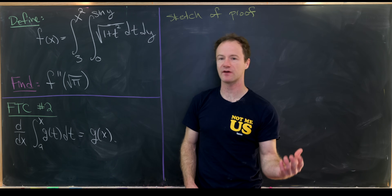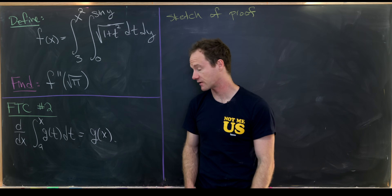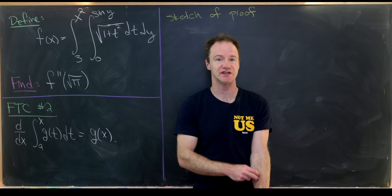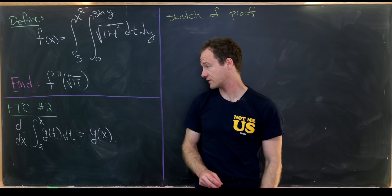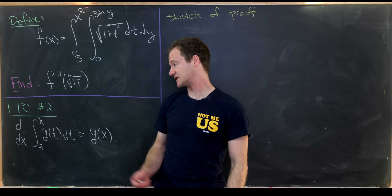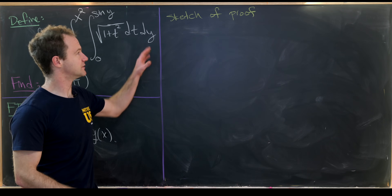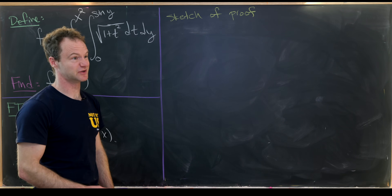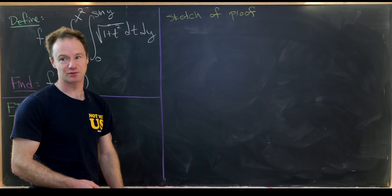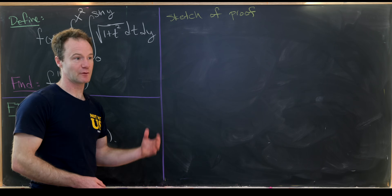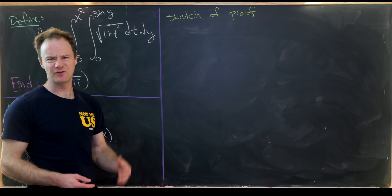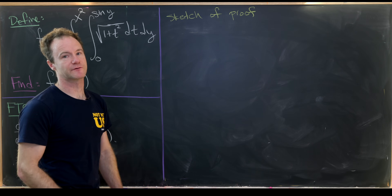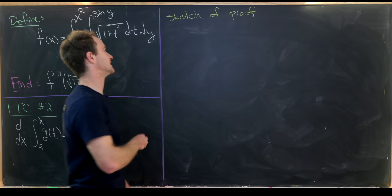In some ways this derivative and integral cancel each other. There should be some hypotheses on g, like continuity, but we won't worry about those as we recall this rule. What we will do is sketch a proof of FTC Part 2, because it's a nice proof and one you might want to revisit every once in a while — it's a good refresher on a couple of different techniques.